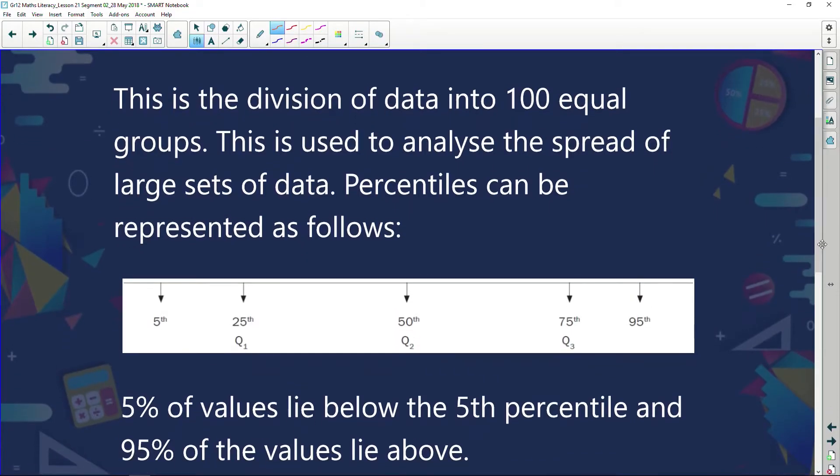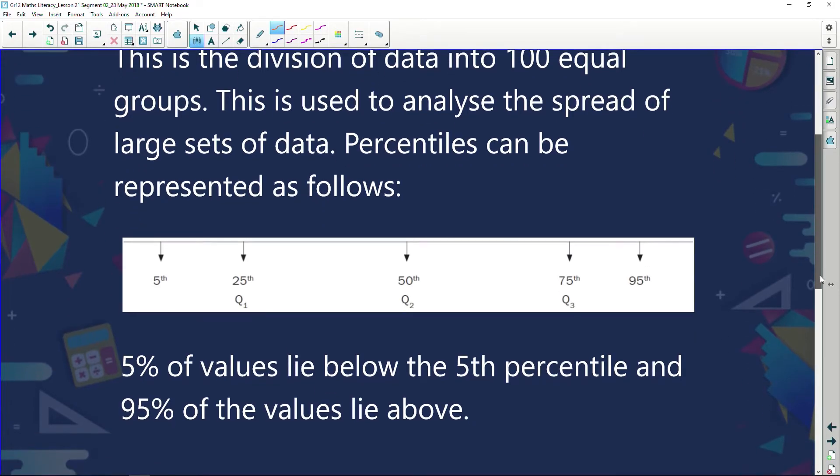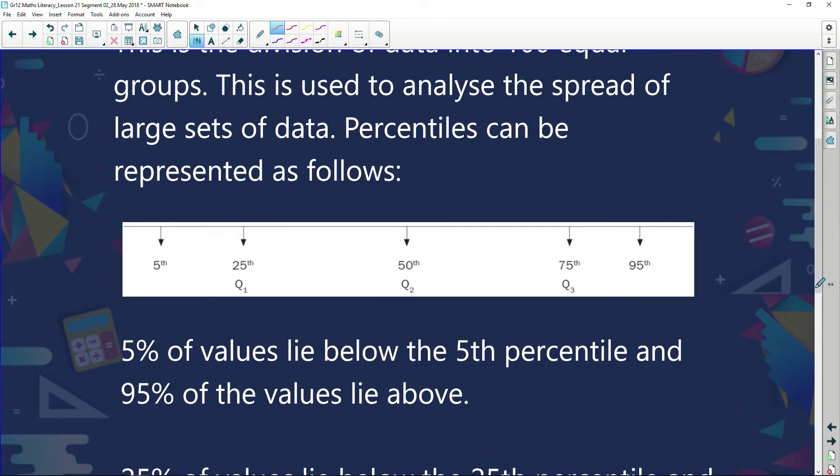Let's have a look at the true meaning of percentiles. Percentiles is the division of data into a hundred equal groups. This is used to analyze the spread of large sets of data. If you look at this graph, you can see this set of data ranges from zero to a hundred. We've got our quartile two, also known as our median, our quartile one, and our quartile three.